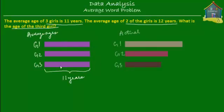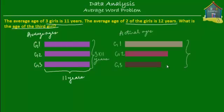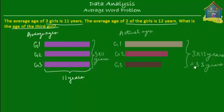These are the actual or real ages, and these are the average ages. If the average age of the three girls is 11 years, then the total age of the girls is 11 plus 11 plus 11, or 3 times 11 years. The total age does not change whether it's the average age or the actual age. So the total age of the girls is 3 times 11 years, which equals 33 years.